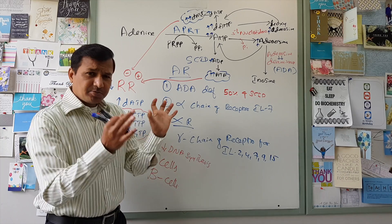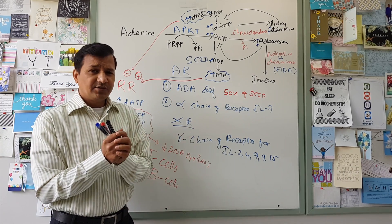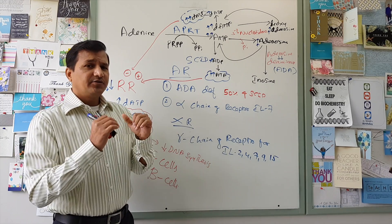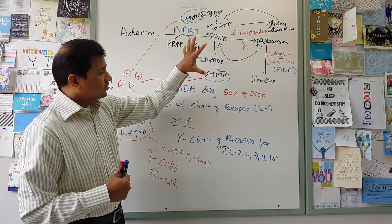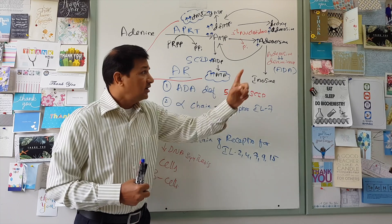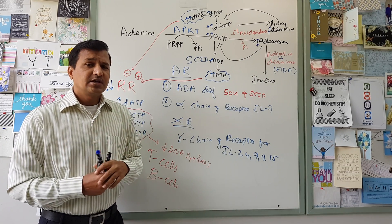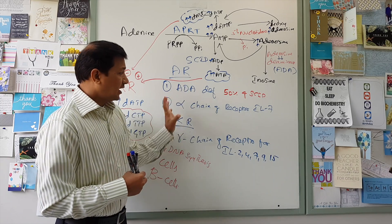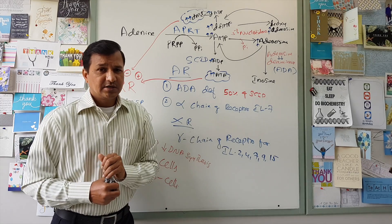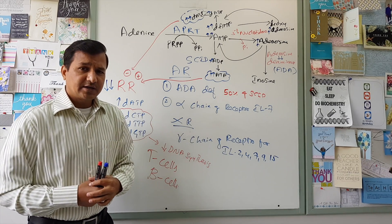I explained this video a little faster to save time, so you can run it slowly or pause to understand the concepts. I hope this video has helped you understand the mechanism of severe combined immunodeficiency disease in relation to adenosine deaminase deficiency. Thanks for watching and see you in my next video.